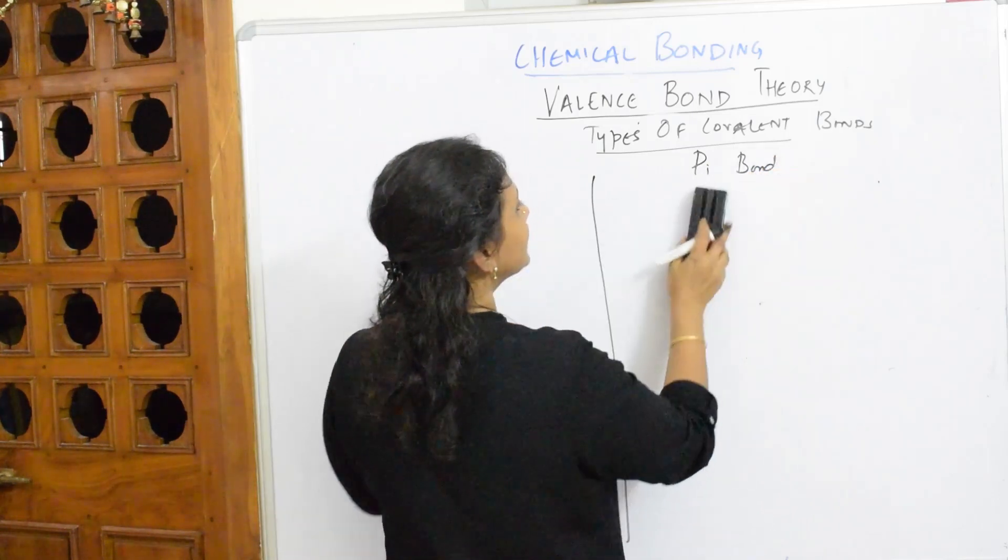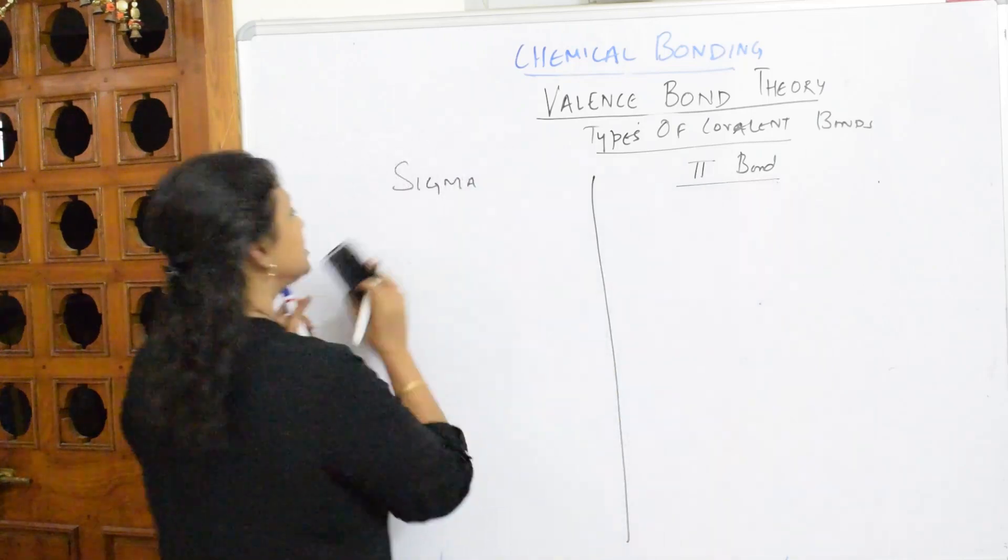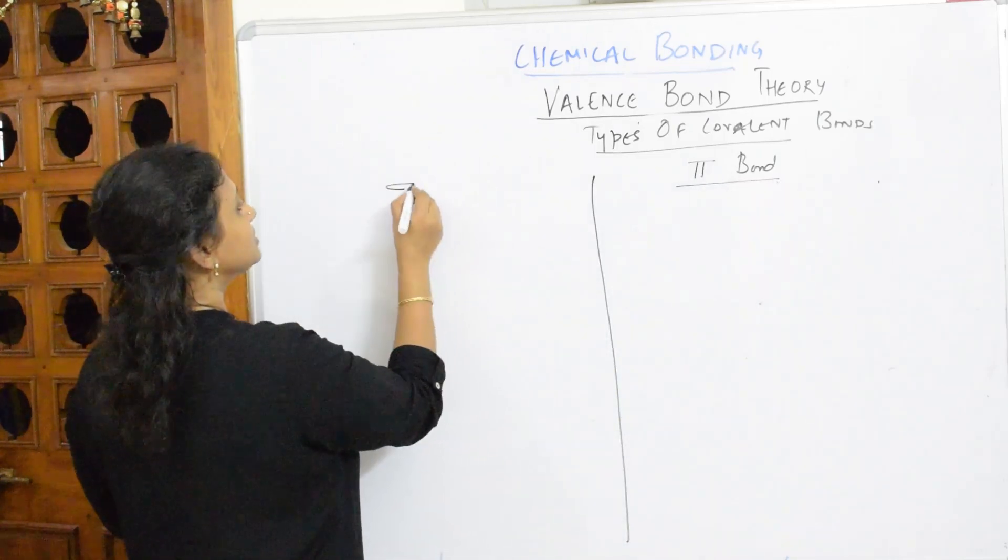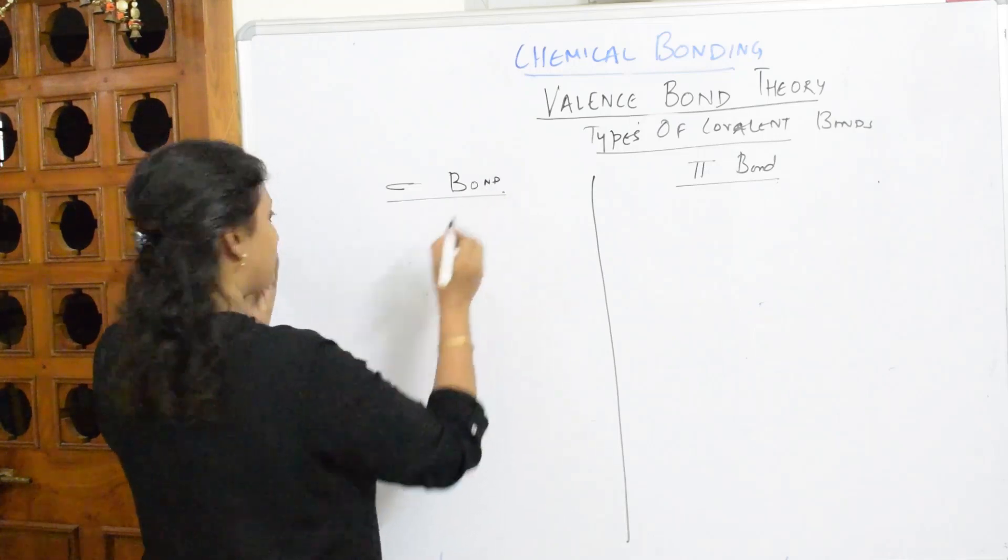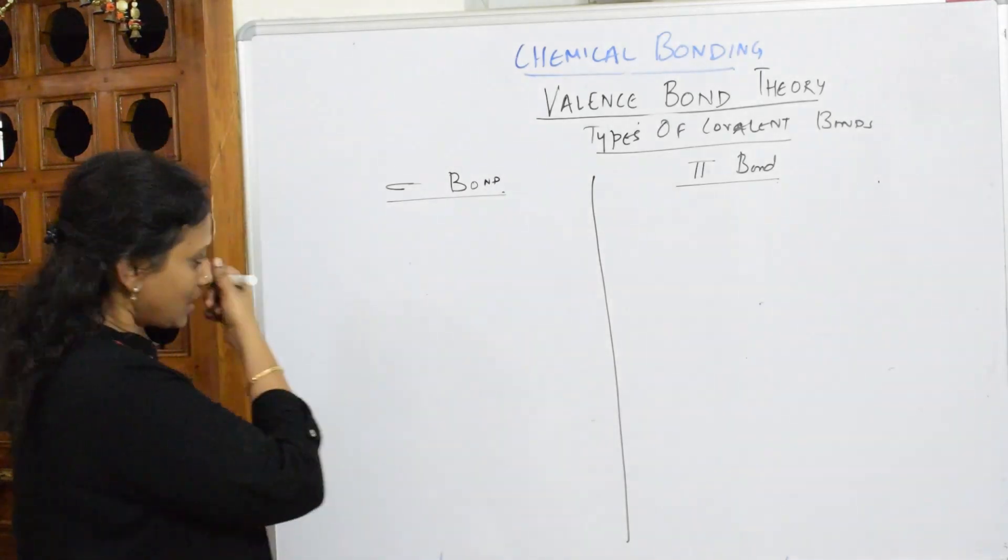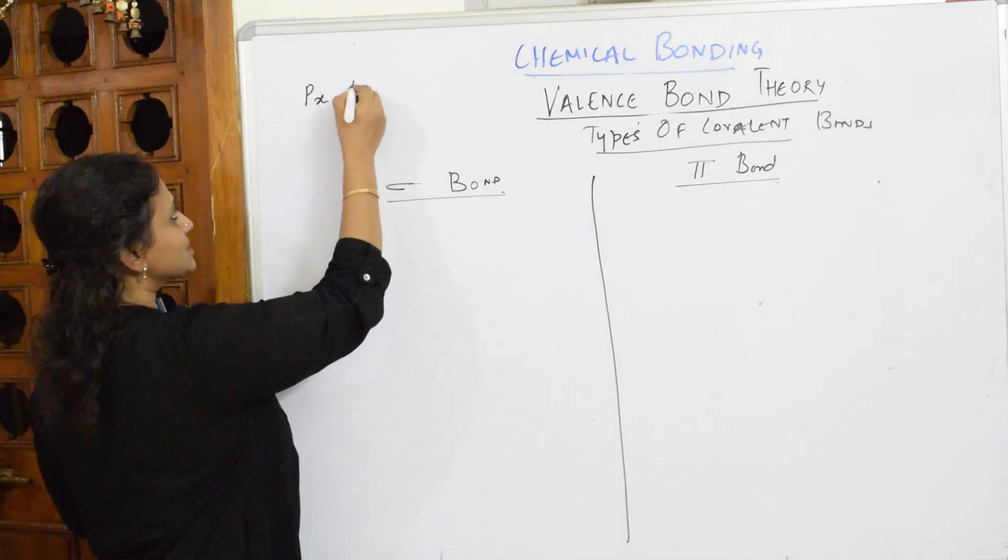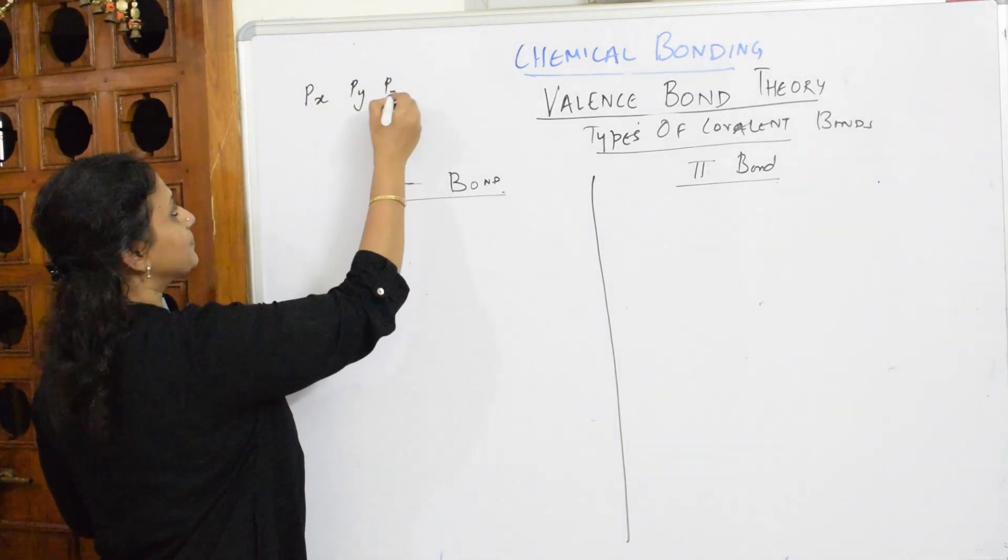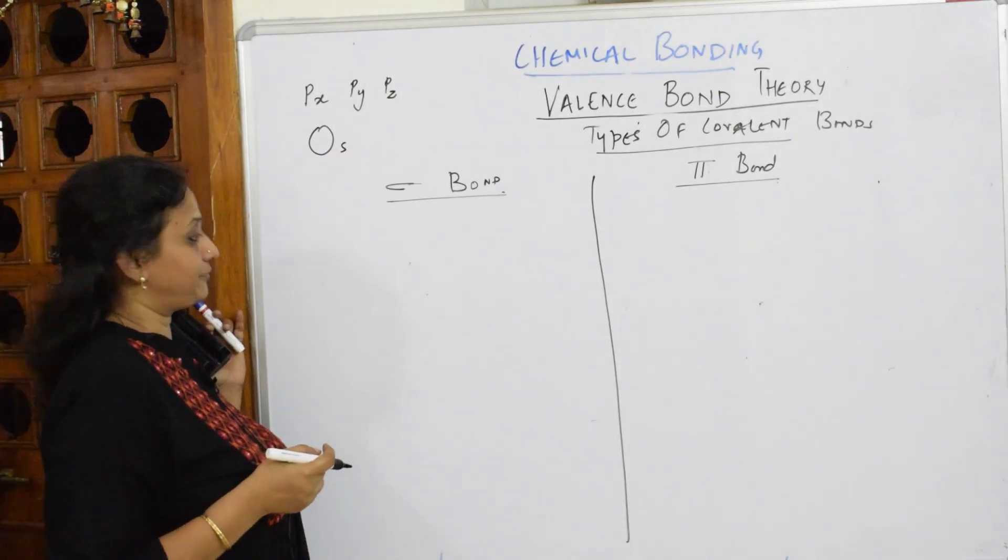Instead of writing pi bond, I'm writing the symbol pi. Instead of sigma bond, I'm writing the symbol sigma. Now, how is the sigma bond, pi bond form? Let us see. I've already said p orbitals are px, py, pz. S orbital is spherical. You also have d and also f.